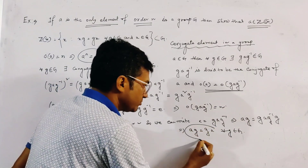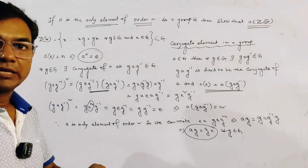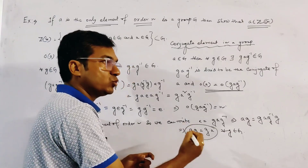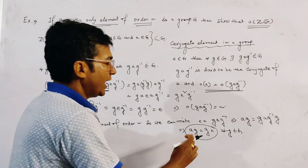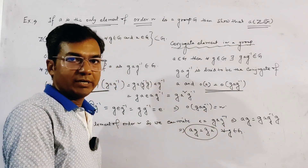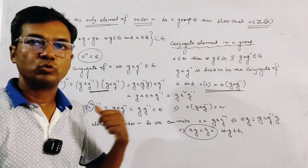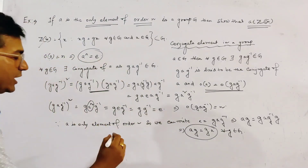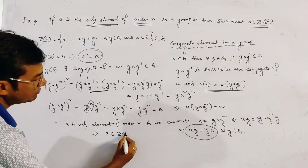This relation shows that a is able to commute with every element of G. Since a commutes with every element of G, a must be in the center of the group, by the definition of the center. Therefore a belongs to Z(G).